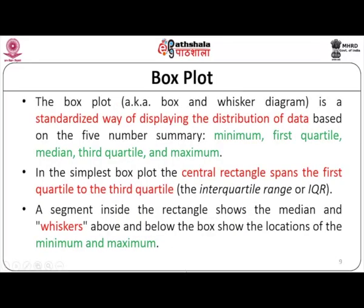The second type of visualization for a single variable is the box plot, also called a box or whisker diagram. This is a standardized way to represent the distribution of data using five parameters: the minimum, the first quartile, the median, the third quartile, and the maximum. We visualize the data as a simple rectangular box spanning the first to the third quartile — the inter-quartile range — with a segment inside showing the median and whiskers highlighting the minimum and maximum.